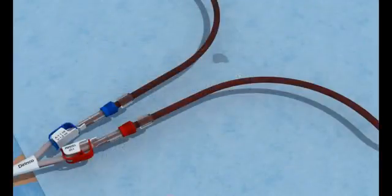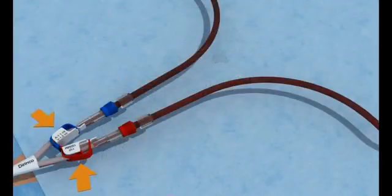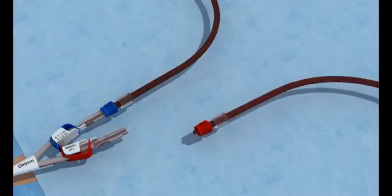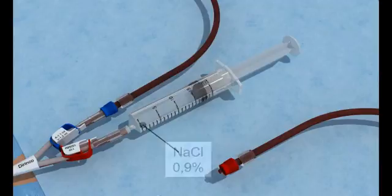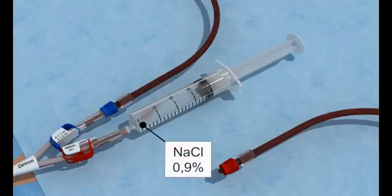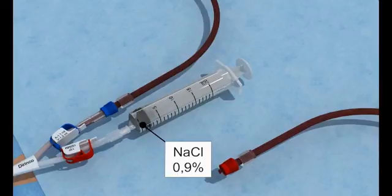Close the catheter clamps. Disconnect the arterial blood line. Connect the 20ml syringes filled with sterile 0.9% saline solution and flush the arterial lumen. Close the arterial clamp.